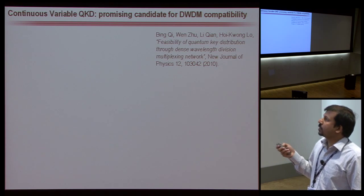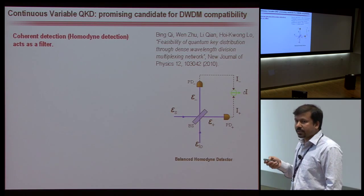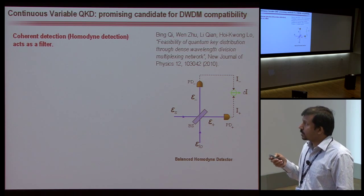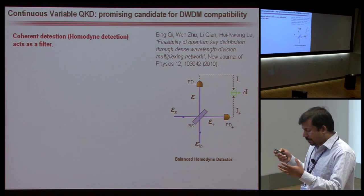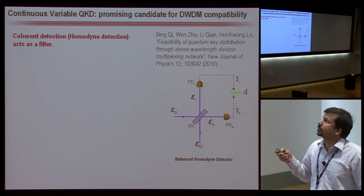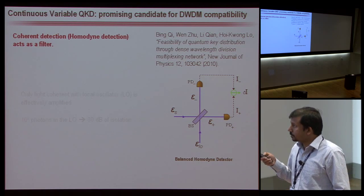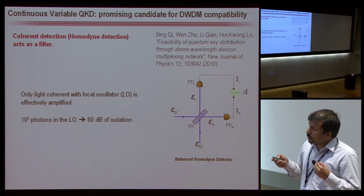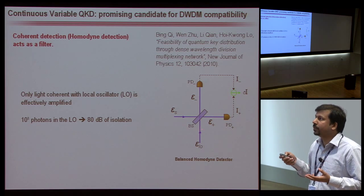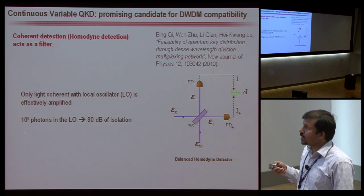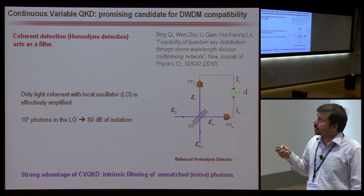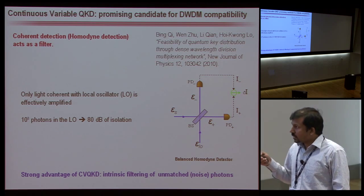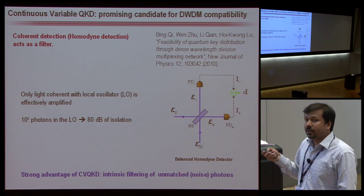Preliminary work has been done by Bing-Chi et al., showing that homodyne detection acts like a filter. In homodyne detection, you have a local oscillator and a signal — they interfere on a beam splitter, you subtract the current from the photodiode, and extract information about the signal from the variance of the subtracted photocurrent. Photons which are incoherent with the local oscillator are not effectively amplified. For example, using a local oscillator with 10^8 photons per pulse gives 10 dB of isolation without any extra filter — an intrinsic filtering property to remove noise photons not coherent with the local oscillator.